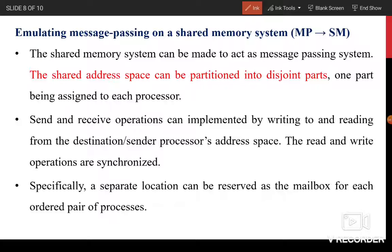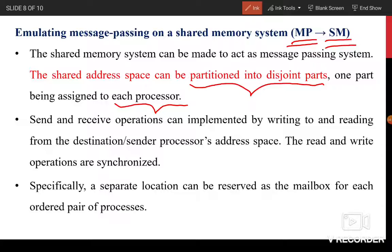How can you emulate message passing on a shared memory system? The shared memory can be made to act as a message passing system: the shared address space is partitioned into disjoint parts, and one part is assigned to each processor. For send and receive operations, you use the usual read and write from the destination or sender process address space, though synchronization is still required.